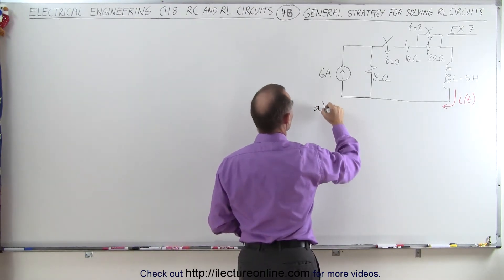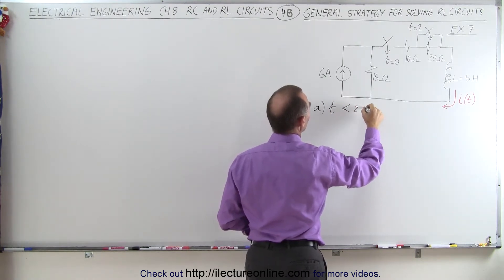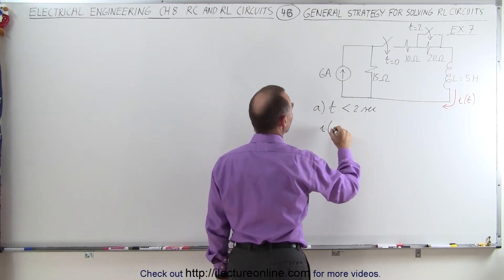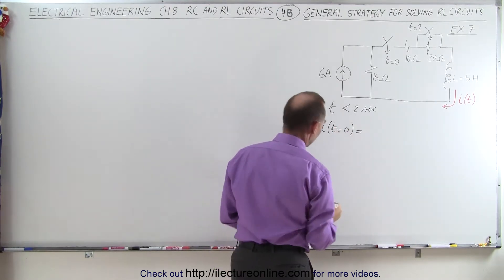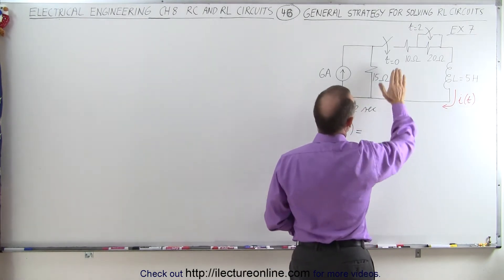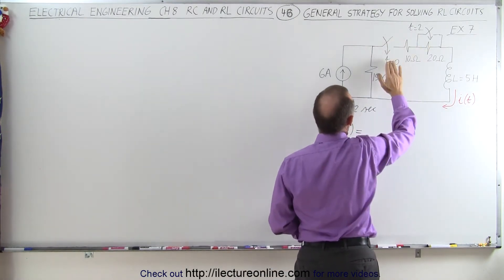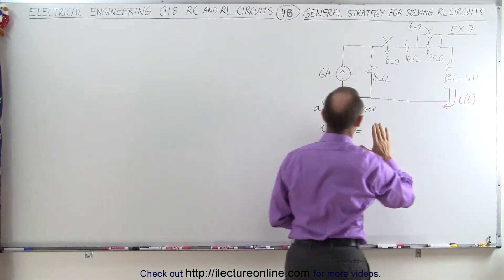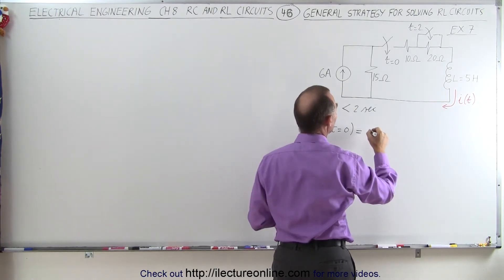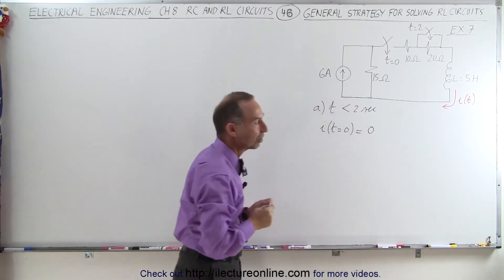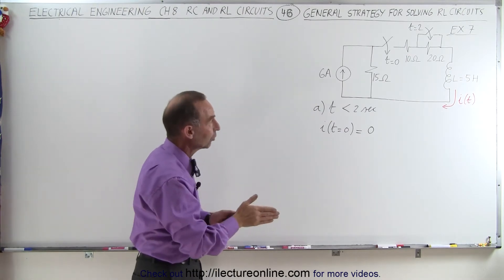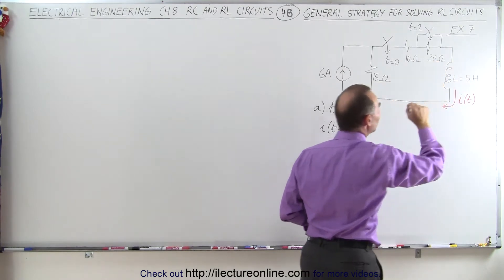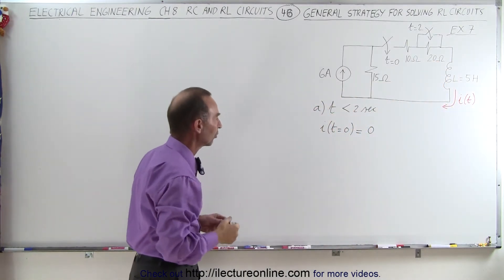So Part A, we're going to let time be less than two seconds, from zero to two seconds, and we need to find the current through the inductor at T equals zero first. When time is equal to zero, notice that if none of these switches have closed yet, the current will simply flow through the 15-ohm resistor and not reach the inductor. So we can say there's zero amps through the inductor initially. When the first switch closes, the inductor will oppose the change in current, so initially there'll be zero current through the inductor after the first switch closes.